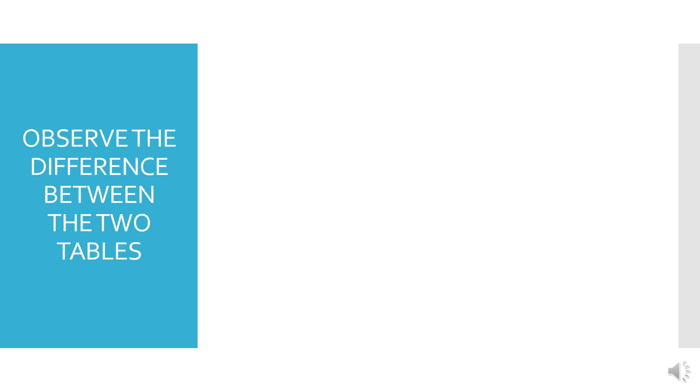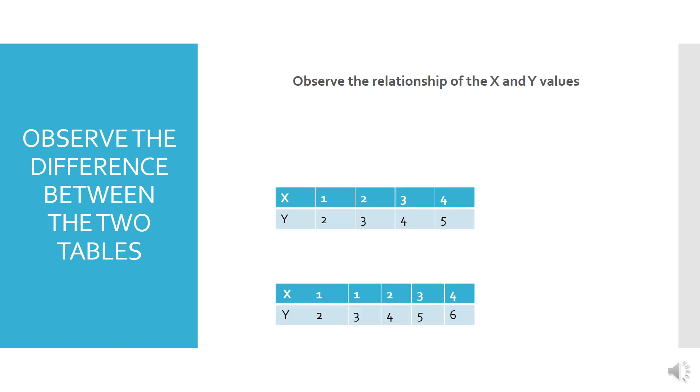Let us observe the difference between the two tables. Observe the relationship of the x and y-values. Look, the function table and the table that is not a function. In a function table, there is one unique number in x, not repeated, has a relationship with one number in y.